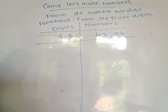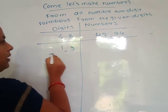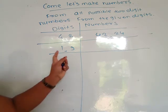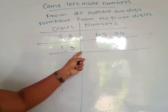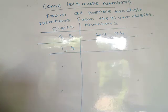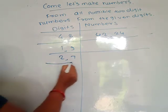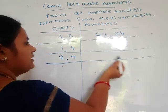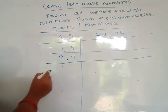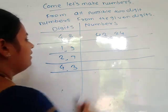Next: digits 1 and 9 — you write the numbers 19 and 91. Then digits 2 and 7 — you write 27 and 72. Then digits 4 and 3 — you write 43 and 34.